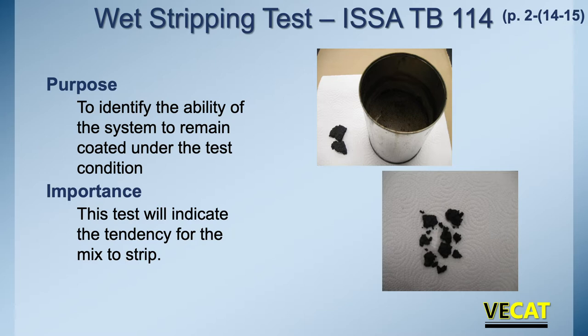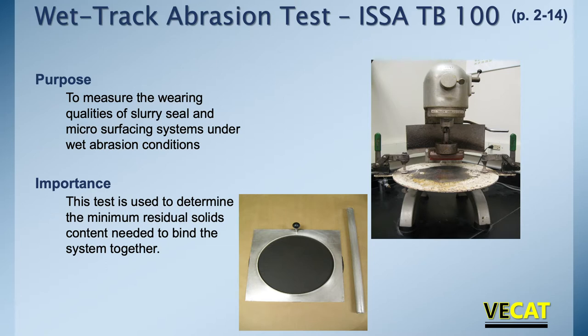The wet stripping test is very important because it indicates the tendency of the mixture to strip the bitumen from the rock. You don't want a slurry or micro system to have an inordinate amount of this — it will cause raveling and the surface will wear off the road too quickly. The wet track abrasion test gives an indication of how the material is actually going to wear under wet conditions, which is especially important in wintertime when roads are wet for longer periods. This test helps determine the right amount of asphalt needed to bind the system together properly.